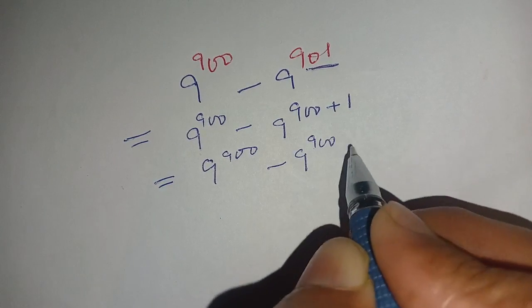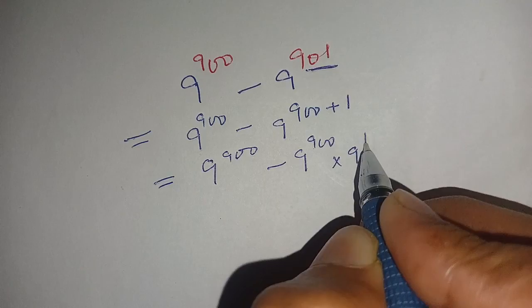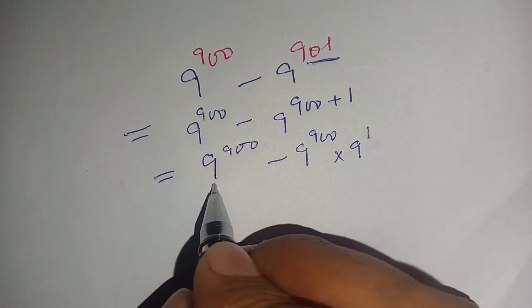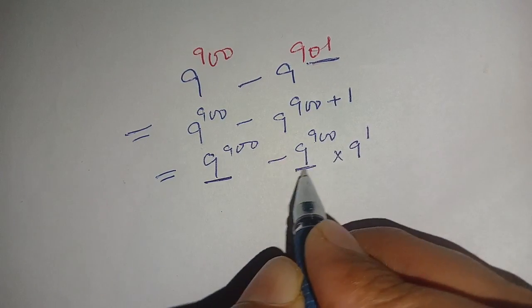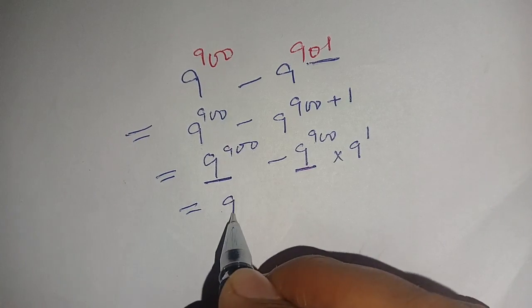From this, 9^900 and 9^900 can be taken out. We can write this as 9^900 times the remaining expression.